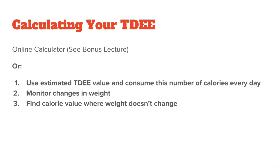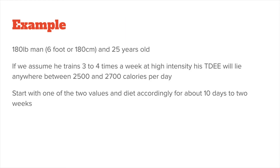To make things easier for you, let's take the example of a man who weighs 180 pounds, is 6 foot or 180 centimeters tall, and 25 years old. If we assume that he trains 3-4 times a week at high intensity, his TDEE will lie anywhere between 2500 and 2700 calories per day. You would then start with one of the two values and diet accordingly for about 10 days to 2 weeks. If after this period you see you are gaining weight, you will have to decrease your initial calorie value, and if you are losing weight, increase it.